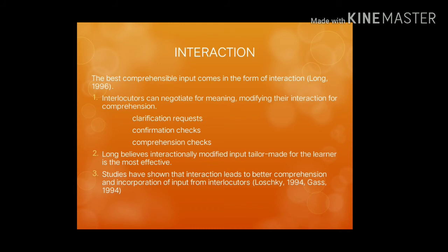The third ingredient is interaction. According to Long, the best comprehensible input comes in the form of interaction. Interlocutors can negotiate for meaning and modify their interaction for comprehension. There are three sub-points: the first is clarification requests, the second is confirmation checks, and the third is comprehension checks.